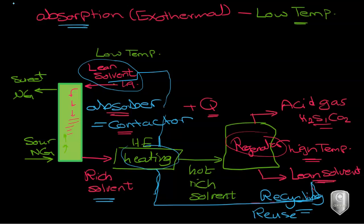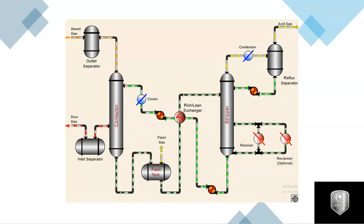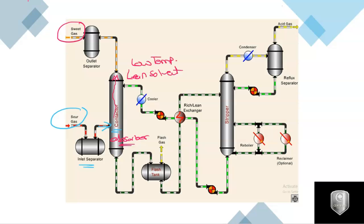Looking at the process flow diagram more closely: we have an inlet separator, then our sour gas is fed at the bottom of the contactor — which is also our absorber — for chemical absorption. After treatment, the sour gas moves up and becomes sweet gas. The lean solvent at low temperature enters from the top, takes all the carbon dioxide and hydrogen sulfide, and exits from the bottom as rich solvent — the stream carrying hydrogen sulfide and carbon dioxide.